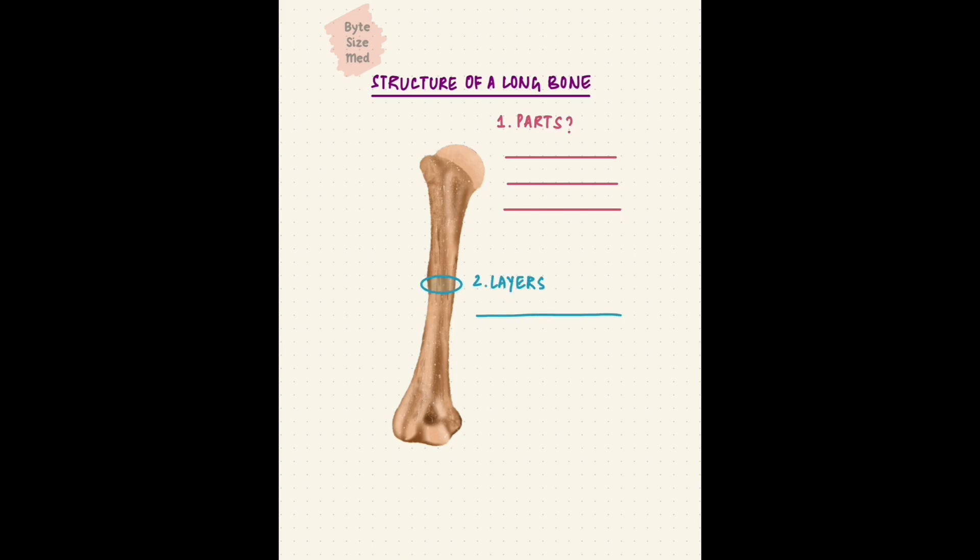We'll start with the structure of a long bone. Your task is to recall: what are the three parts of a long bone, what are the layers of bone from outside in, bones have marrow - where is that marrow located, and what are the two types? You can pause the video here and take as much time as you need for recall.